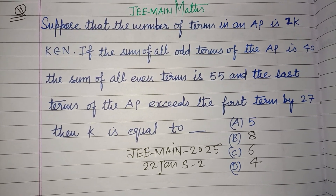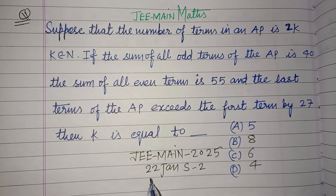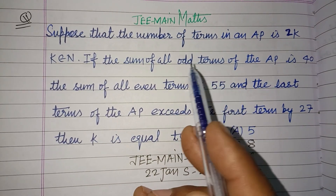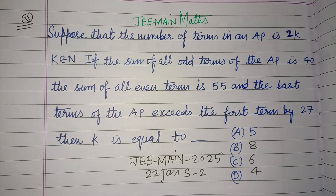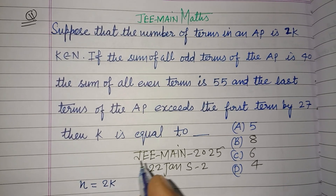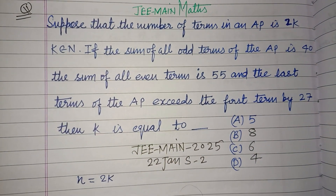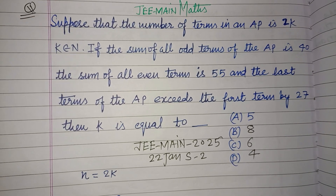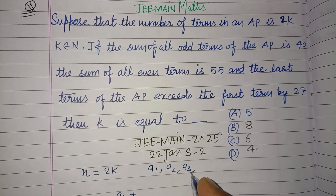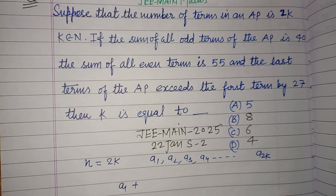Hello viewers, warm welcome to this YouTube channel. This is a question from JEE Main 2025, 22nd January, Shift 2. Suppose that the number of terms in an AP is 2k, where k belongs to natural numbers N. If the sum of all odd terms of the AP is 40, where the series is a1, a2, a3, a4, ..., a2k.